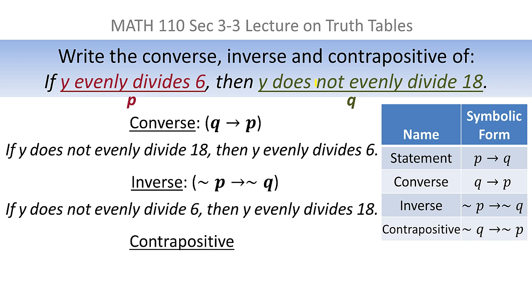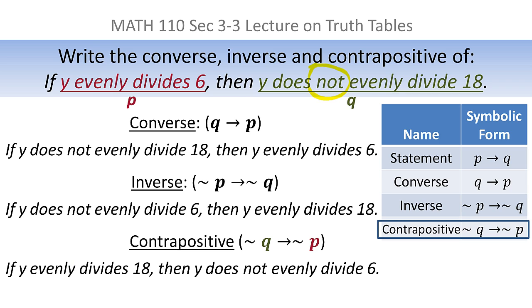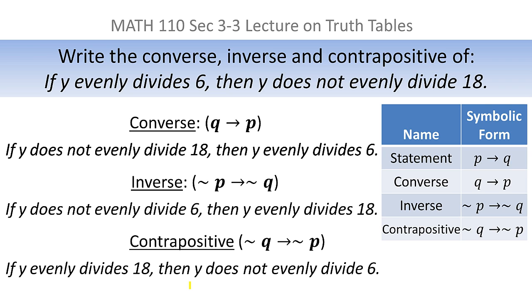For the contrapositive, we switch and negate: not q implies not p. The q goes first and gets negated — since q already had a 'not,' removing it gives 'y evenly divides 18.' Then p gets negated, so 'evenly divides' becomes 'does not evenly divide.' The contrapositive is 'if y evenly divides 18 then y does not evenly divide 6.' So that's the converse, inverse, and contrapositive.